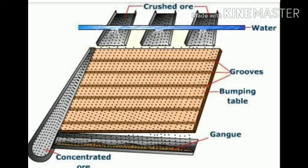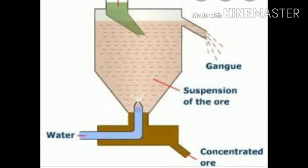In hydraulic washing, hydraulic classifiers are used. As powdered ore flows through the reservoir, the ore impurities, being lighter in nature, will float on the surface while ore particles, being heavier, will sink to the bottom. With the help of a strong water flow, the concentrated ore is obtained at the bottom while gang particles float on the surface and are carried away.